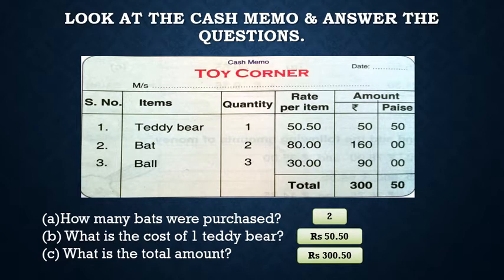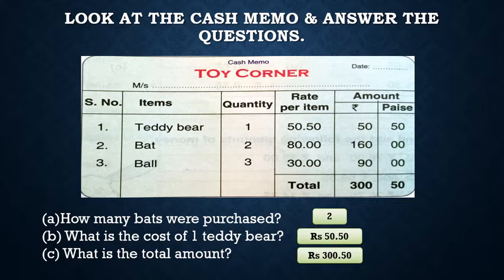Here the name of the shop is Toy Corner. In this we have three items. First one is teddy bear and quantity is 1. One teddy bear's rate is 50 rupees 50 paise. Second item is bat, quantity is 2, and one bat's rate is 80 rupees, so 2 bats rate is 160 rupees. Third item is ball, quantity is 3, and one ball rate is 30 rupees, so 3 balls rate is 90 rupees.